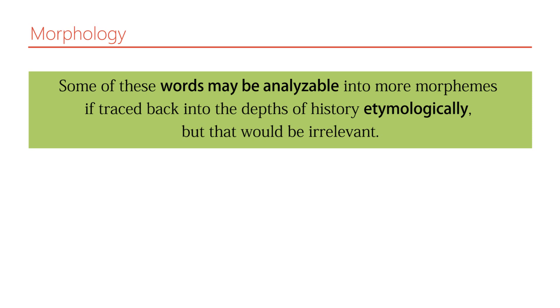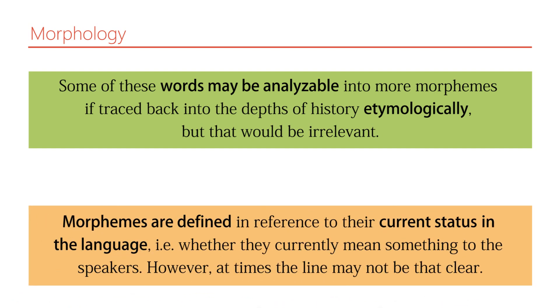I also warned against the confusion that may result if you analyze words etymologically — studying the history of words. Even if 'salamander' or parts of it meant something in a different language thousands of years ago, that doesn't mean it does now. That would be a historical fallacy. You have to evaluate morphemes in their current status, what they currently mean to current speakers of the language, whether English, Spanish, Russian, Persian, Japanese — whatever it is. Morphemes have to be morphemes now.